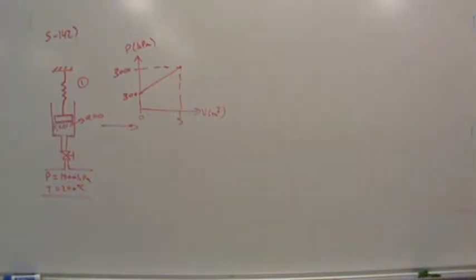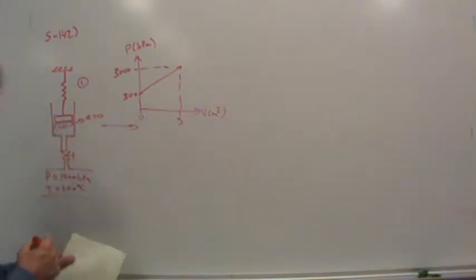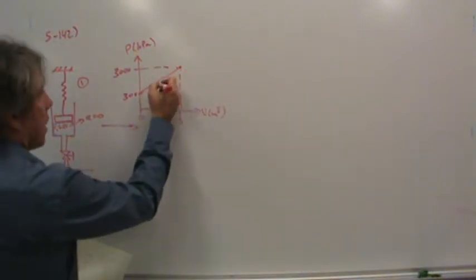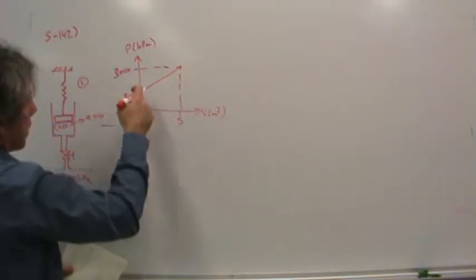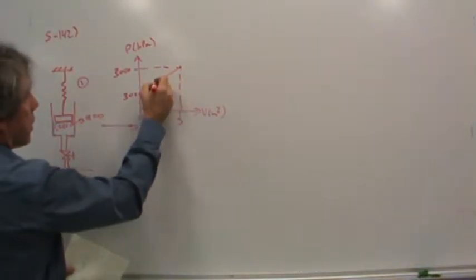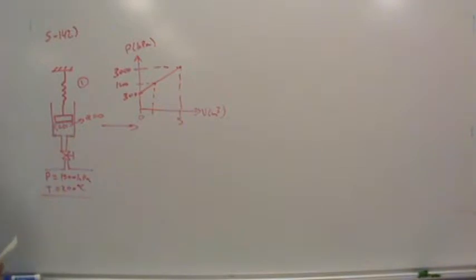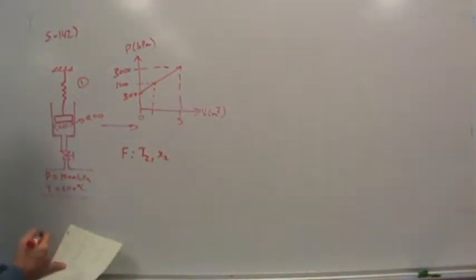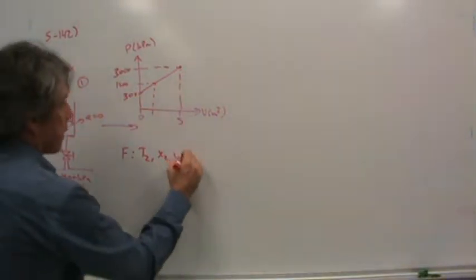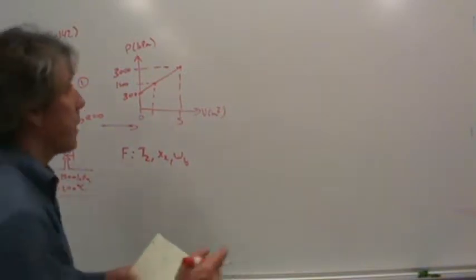Now we know that the pressure in state 2 actually does not go all the way up to 3,000 kilopascals. In fact, it stops well below that at 1,500 kilopascals. So what are we supposed to find? Well, we're supposed to find the temperature in state 2, the quality in state 2 if it's applicable, which of course is going to be, right? We wouldn't ask you to find it if it wasn't, and the amount of boundary work. Well, what tools do we have to do this? We have mass balances and energy balances.